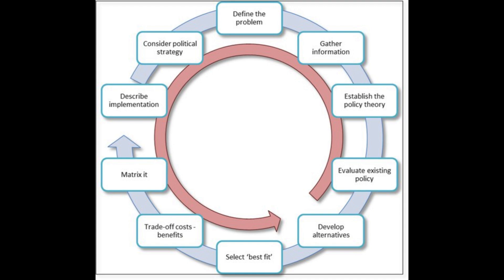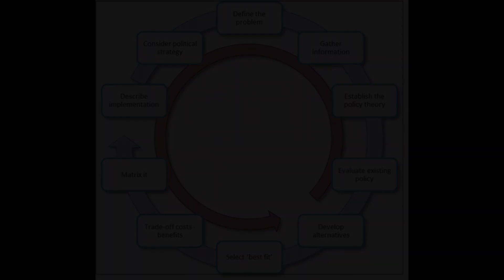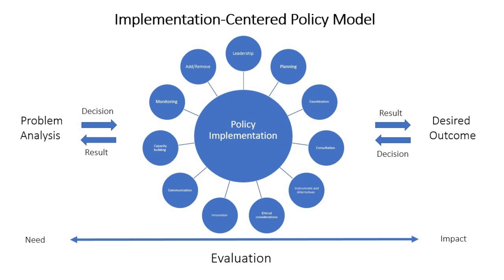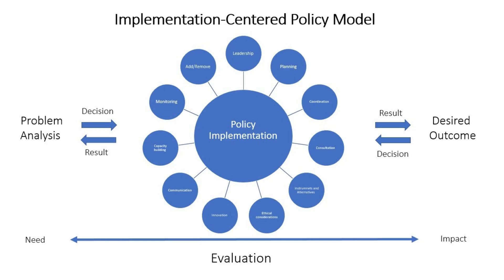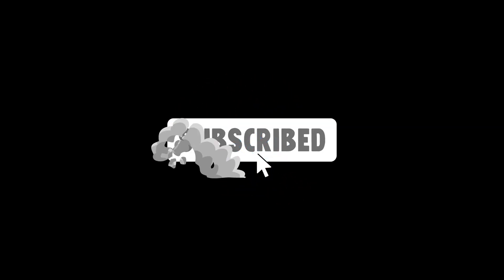Stage 5: Drafting the Policy. With stakeholder input, policymakers can begin drafting the actual policy. This phase usually involves developing clear and concise policy statements that outline the objectives and specific interventions intended to address the identified issue, as well as establishing measurable and time-bound goals and metrics, allowing for a clear evaluation of success post-implementation. Drafting policies is often iterative, requiring multiple revisions based on feedback and further analysis.